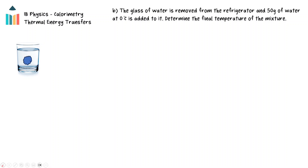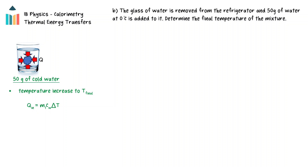Now we are told that the glass of water is removed from the refrigerator and 50 grams of water at 0 degrees Celsius is added to it. We are asked to determine the final temperature of the mixture. Thermal energy will transfer from the water in the glass to the cold water until thermal equilibrium is reached. The total amount of energy transferred into the cold water will be equal to mc delta T, with m being the mass of the cold water.